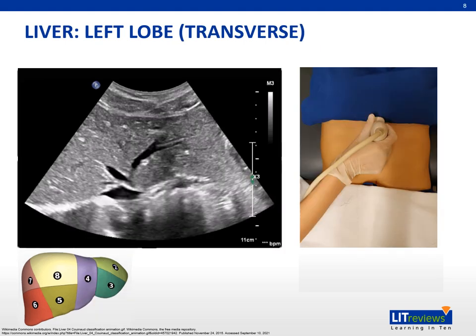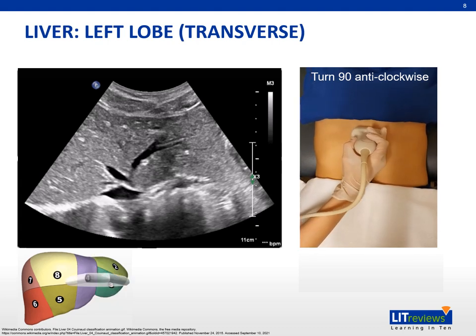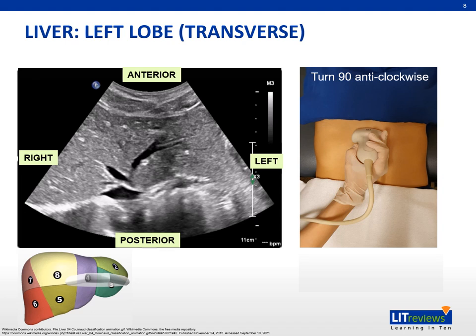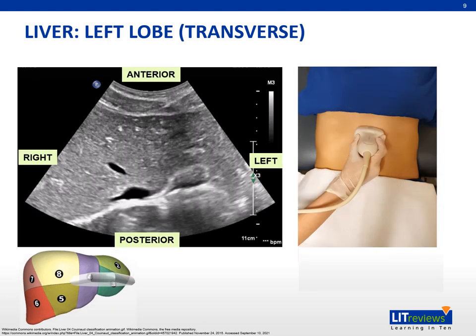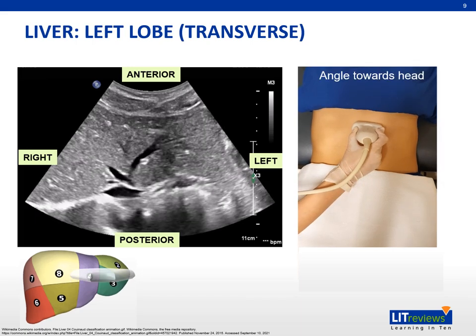We examine every organ and pathology in two planes. To achieve the transverse plane of the left lobe, we turn the transducer 90 degrees anti-clockwise from the longitudinal plane. Often, doing so alone will not give us a clear image with the hepatic veins visualized. What we need to do is angle the transducer towards the patient's head, or cranially.